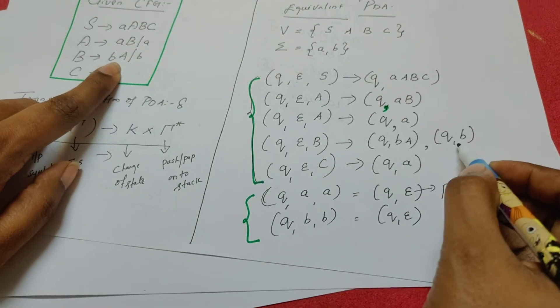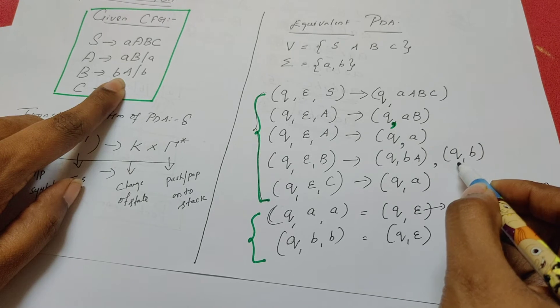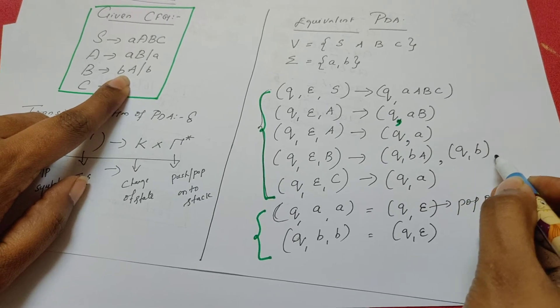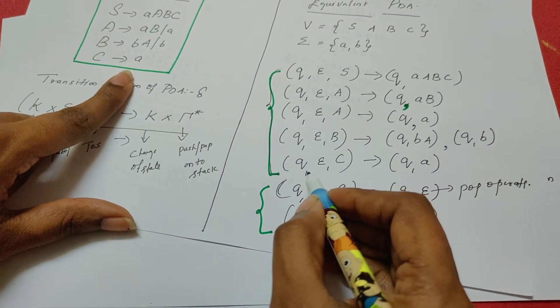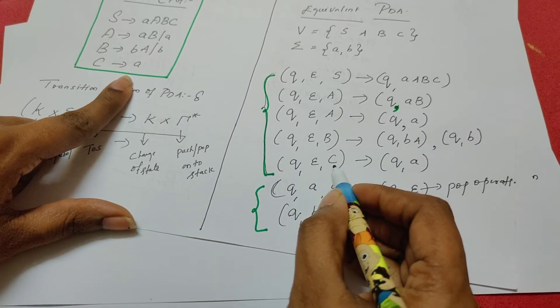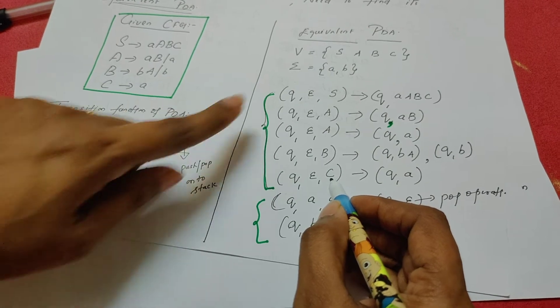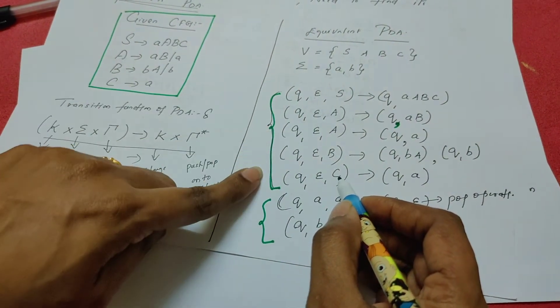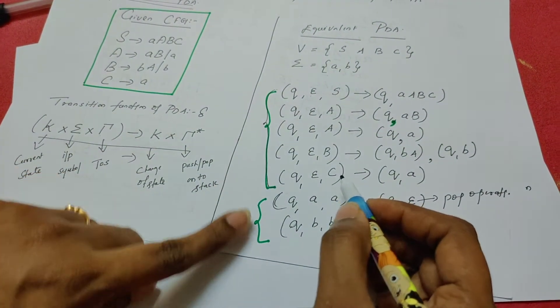There is one more option for B, which I have written as Q, B. Similarly, we have written the rule for variable C also. So for all the variables, we have written the equivalent transition rules.